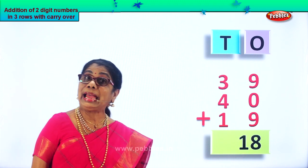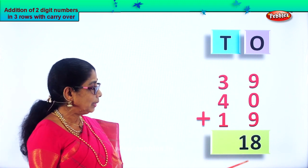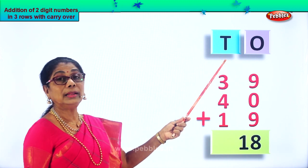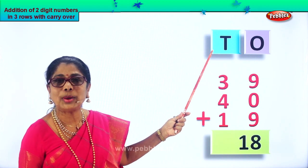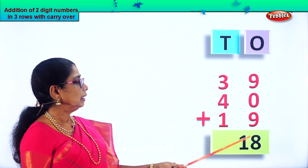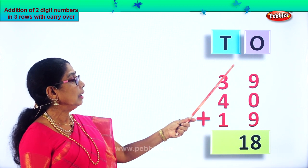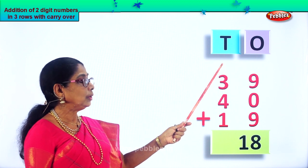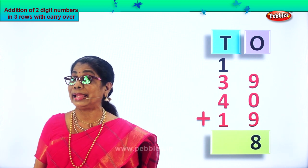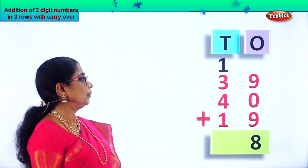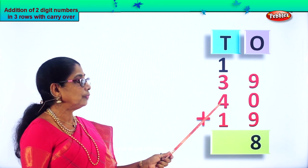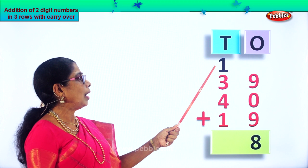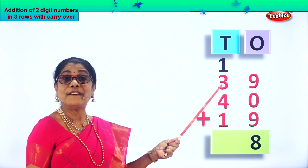So eighteen is here. We leave eight ones as it is. We take the ten ones and bring them to the tens place — it becomes one ten. We carry over one ten to the tens place. Now: one plus three plus four plus one.